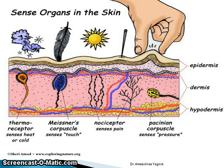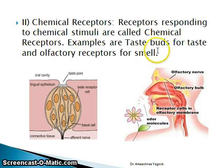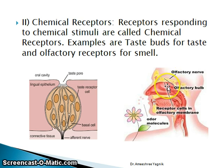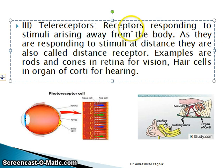Chemical receptors: receptors responding to chemical stimuli are called chemoreceptors. Examples are taste buds for taste and olfactory receptors for smell. The olfactory receptors are located in the nose.